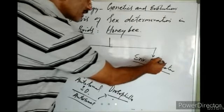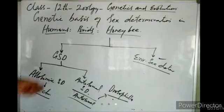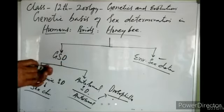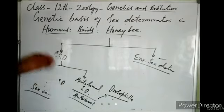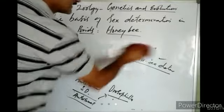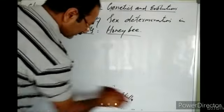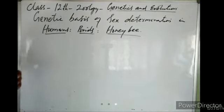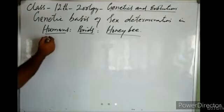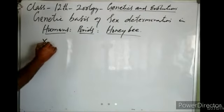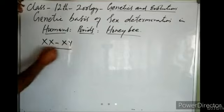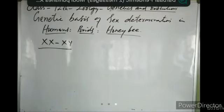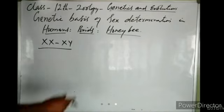We are only concerned with allosomal sex determination in humans, birds, and honeybees. In human beings, there is the XX/XY condition — male heterogamy. The female XX produces ova which always have sex chromosome X.